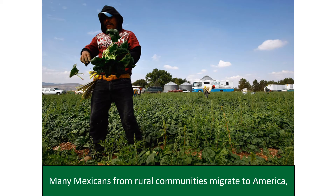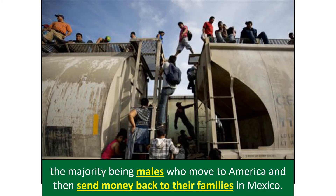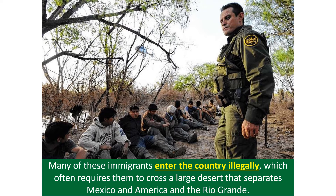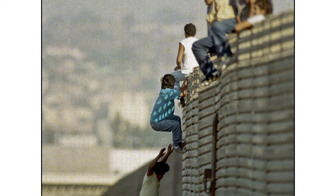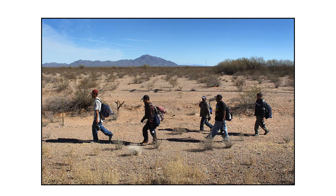Many Mexicans from rural communities migrate to the US — the majority being males who send remittances back to their families in Mexico. Many enter the country illegally because legal immigration requires too much time and paperwork, forcing them to cross a large desert separating Mexico and the US as well as the Rio Grande River. Since the 1990s, the US has built fencing along the border near large cities, meaning migrants now cross through very remote desert areas, making the crossing extremely dangerous — many people become dehydrated and die.